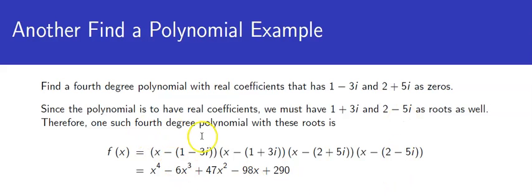So one such fourth-degree polynomial will be formed by factors of x minus each of those zeros.